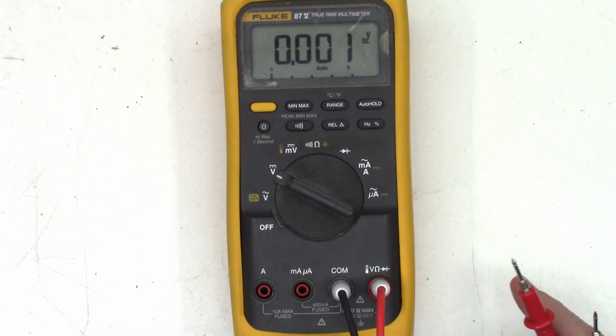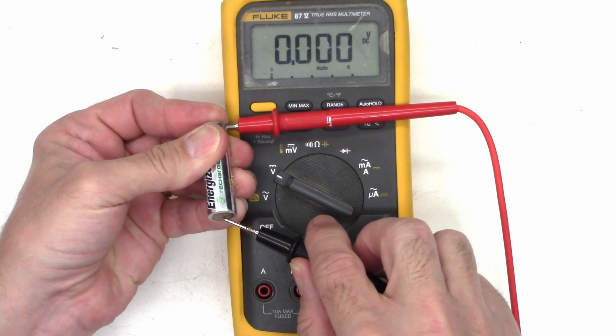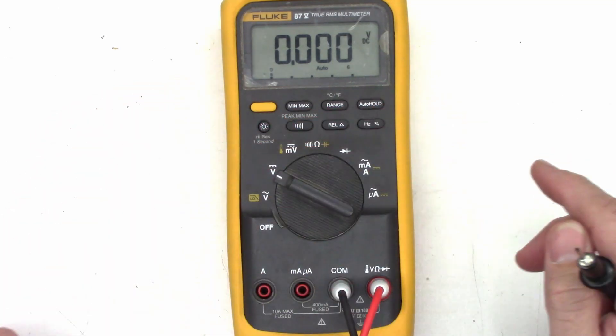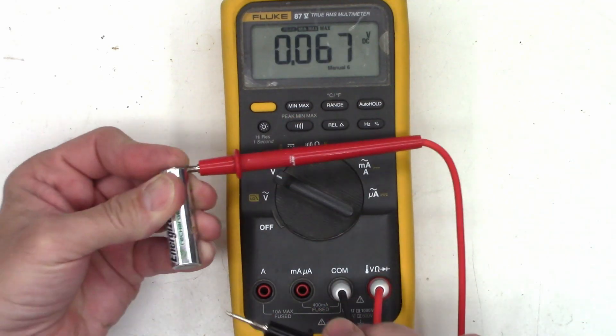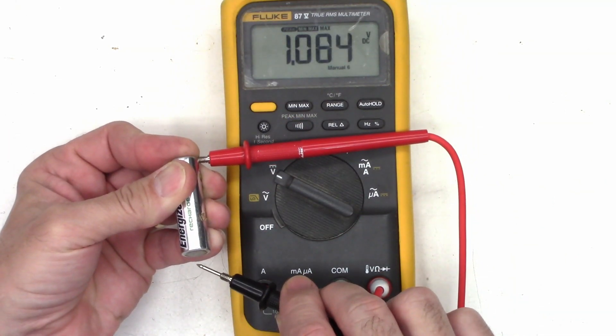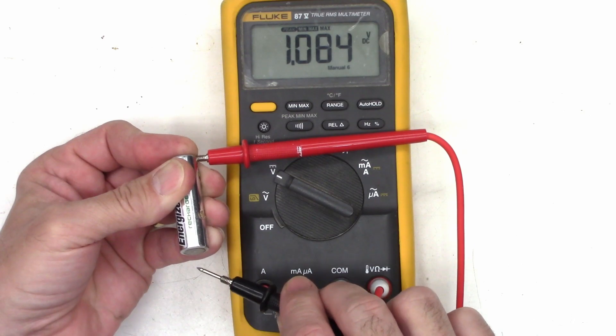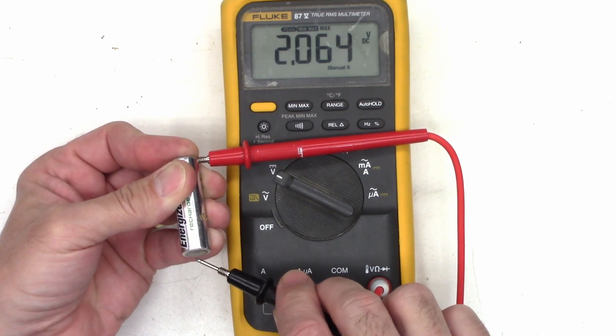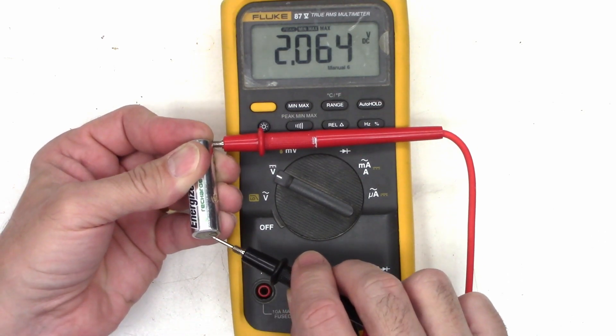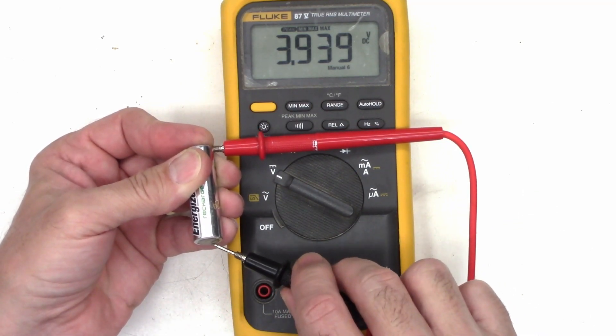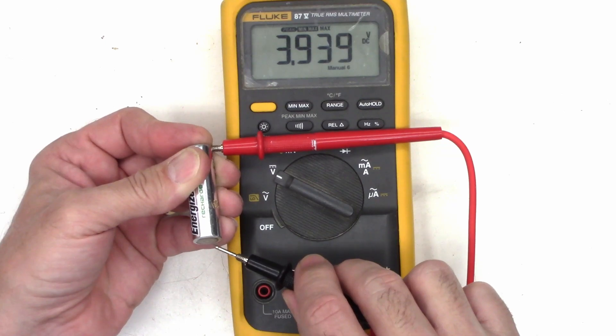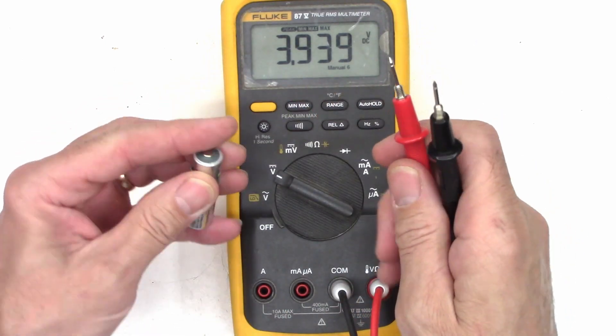But when I go back to volts, absolutely nothing. Now if I go to min max and turn peak on, I do see something. So it shows the peak of 3.9 volts and that can't possibly be because this is a nickel metal hydride cell.